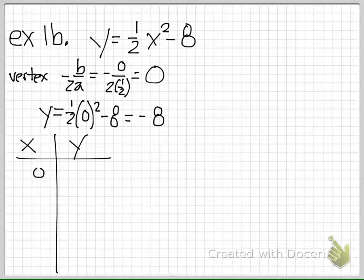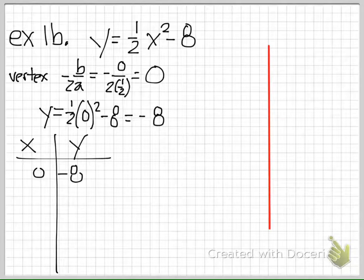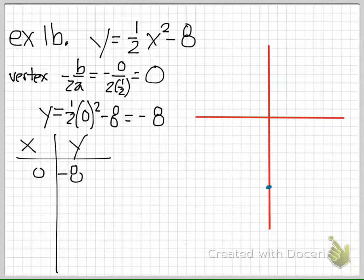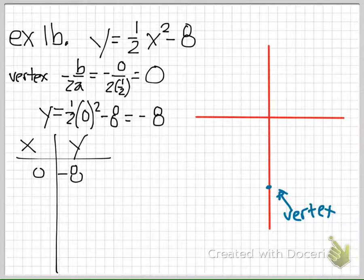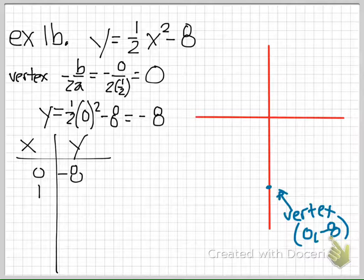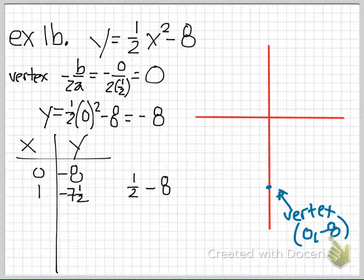Let me create our x, y chart and axis. The vertex is at (0, -8), and the parabola opens upward because a is positive. For x equals 1: 1 squared is 1, times one-half is one-half, and one-half minus 8 is negative 7 and a half. So the point (1, -7.5) gets plotted.